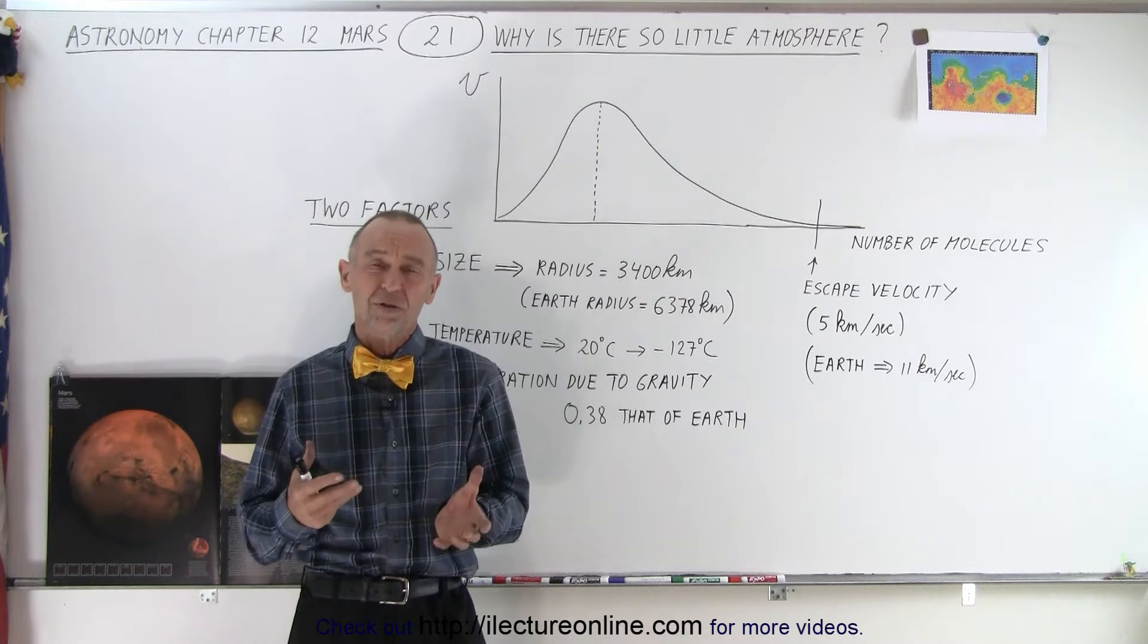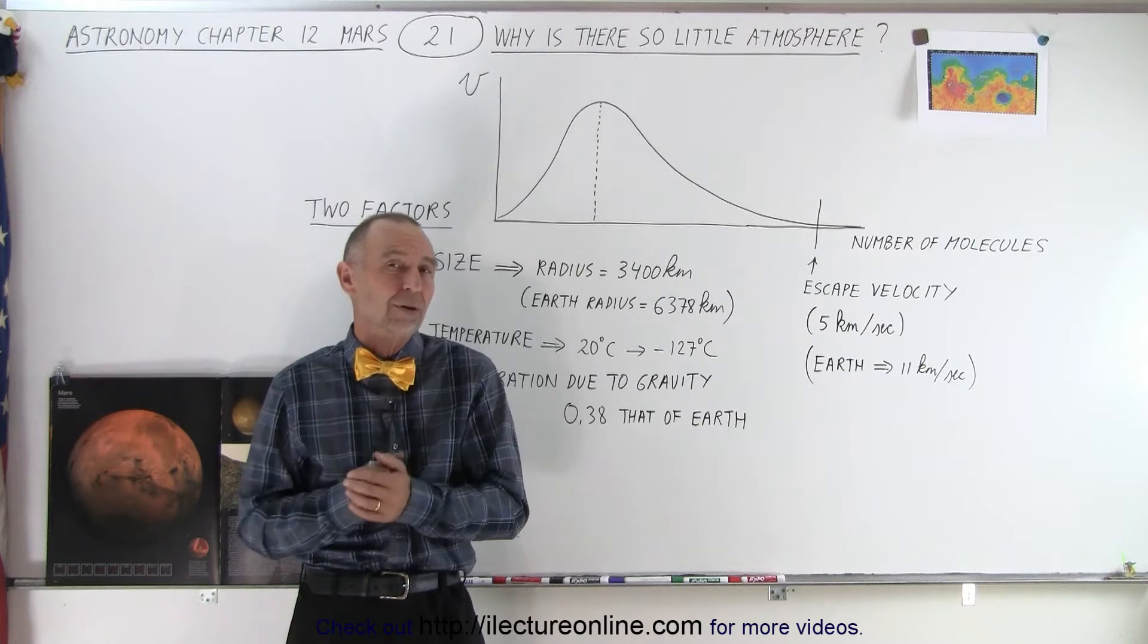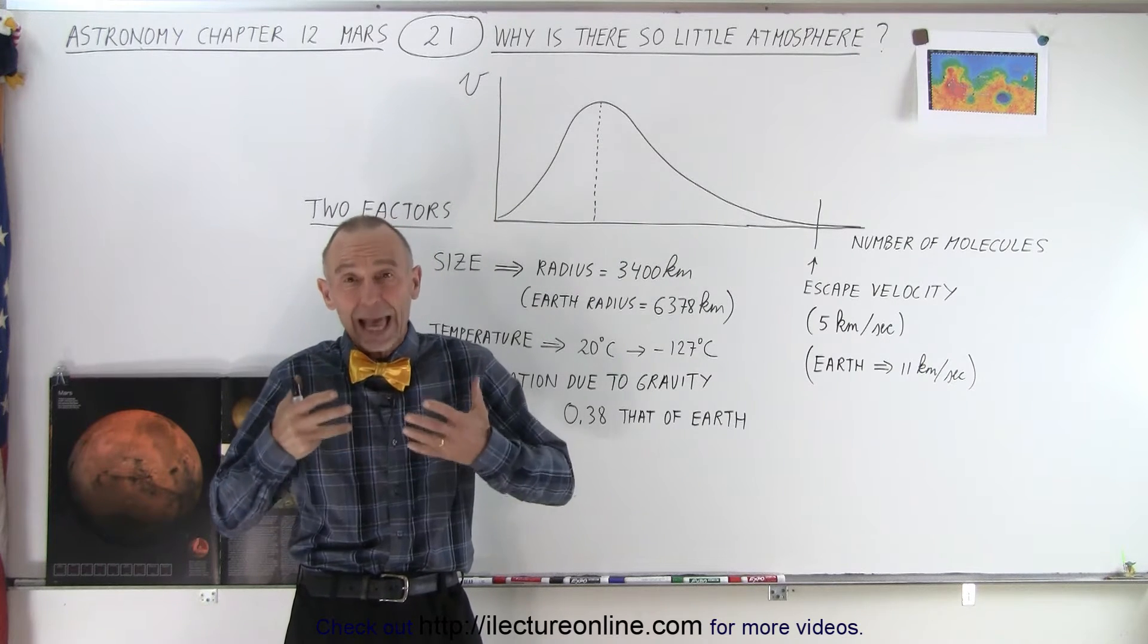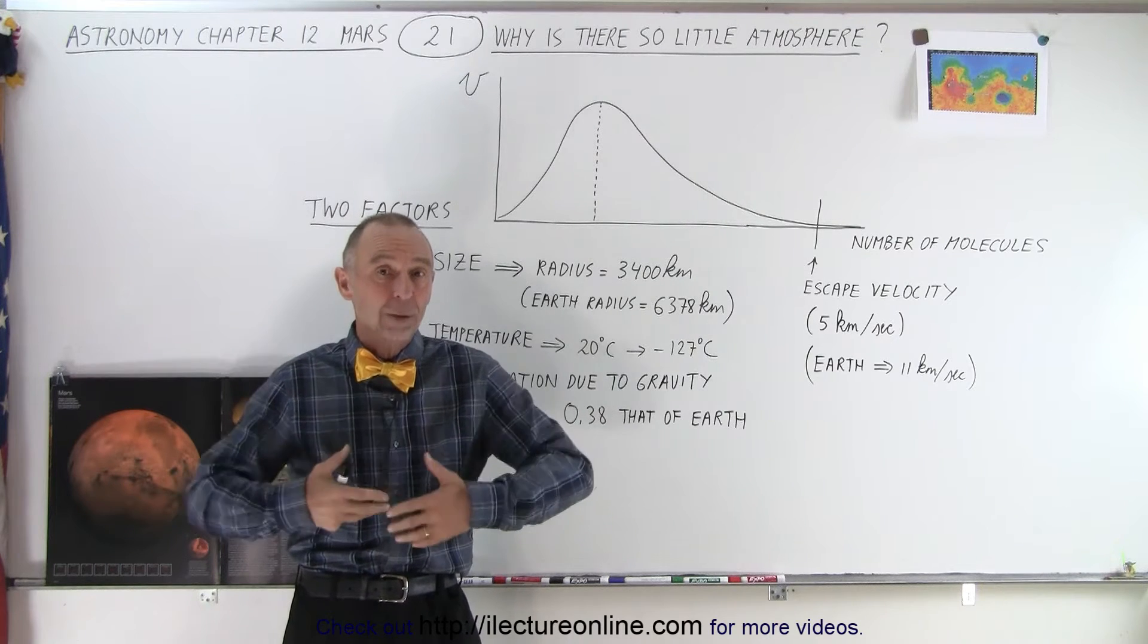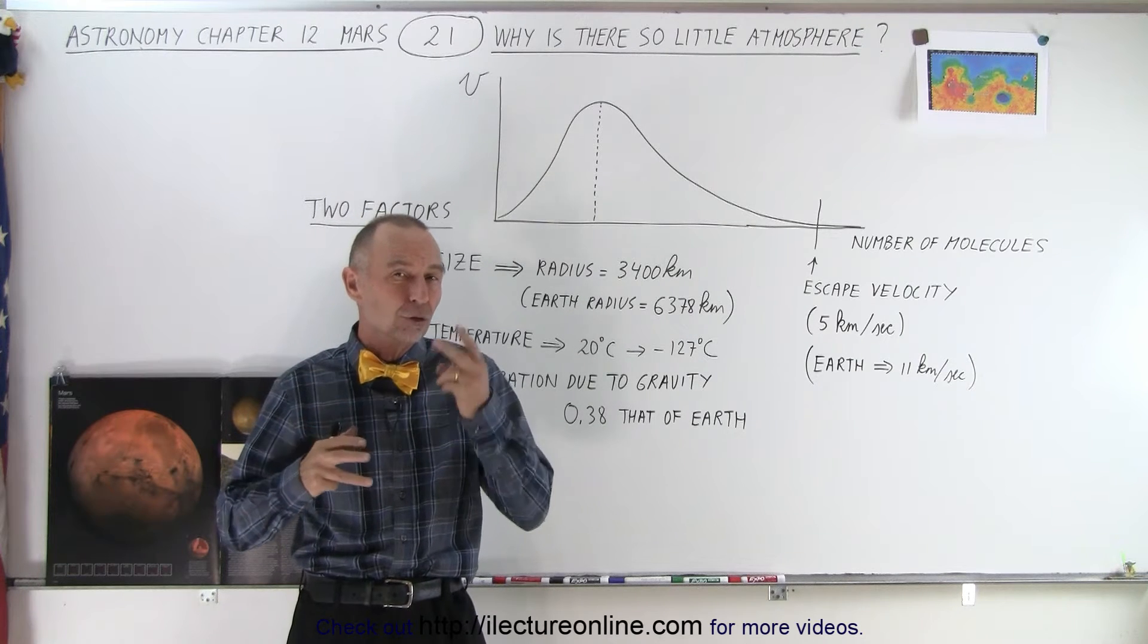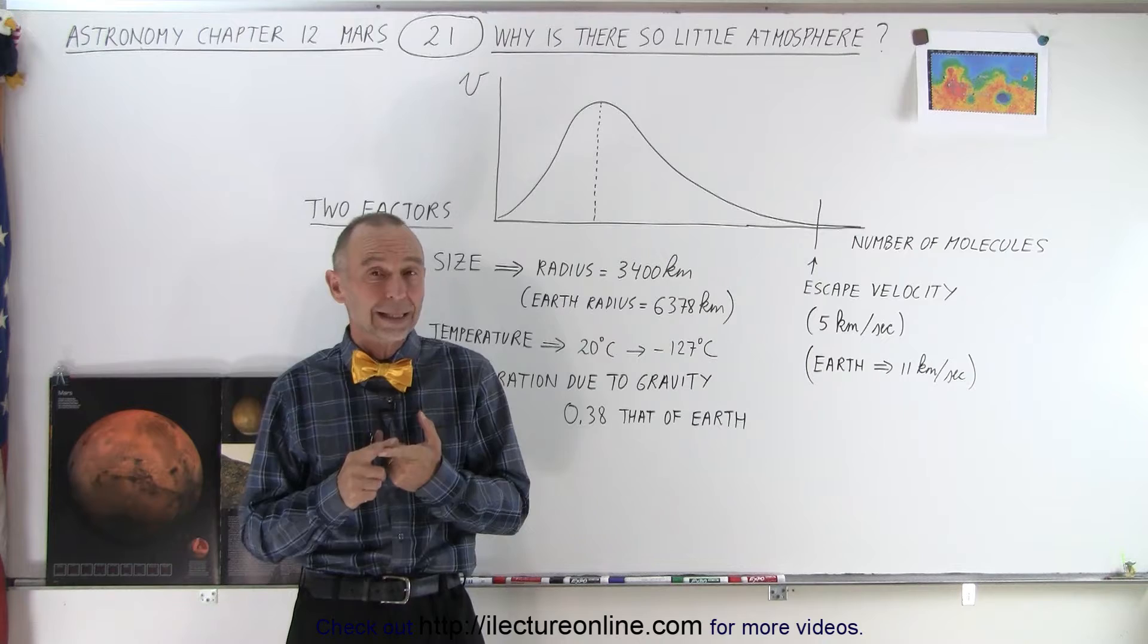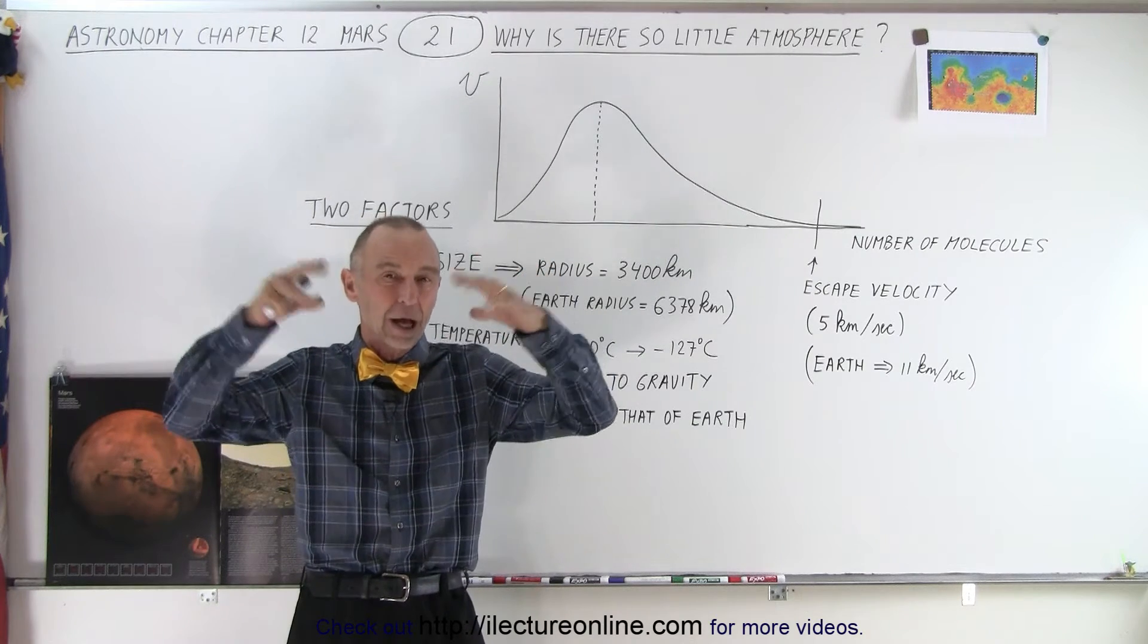But what happened to all the atmosphere? We now know that the atmospheric pressure is less than 1% of the atmospheric pressure on the Earth. So something happened to the atmosphere, and it turns out that something is that it was lost to space. Planets can only hang on to the atmosphere under two conditions. One, that they're large enough so that the gravitational force is powerful enough to hang on to the atmosphere.